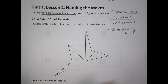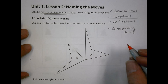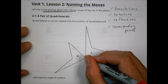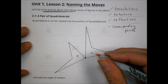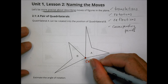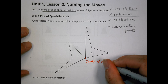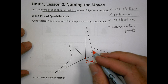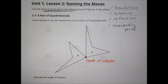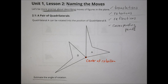The first one said quadrilateral A can be rotated into the position of quadrilateral B. To do that, you had to have what we call a vertex, or a center of rotation. In order to move an object, you want to have a place where everything stays the same. In this case, we're going to keep that point exactly the same, and I wanted you to estimate the angle of rotation.